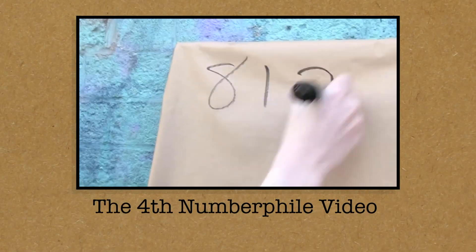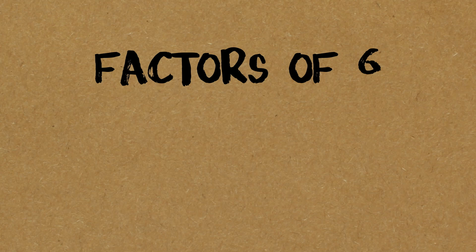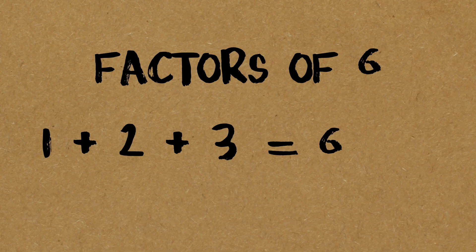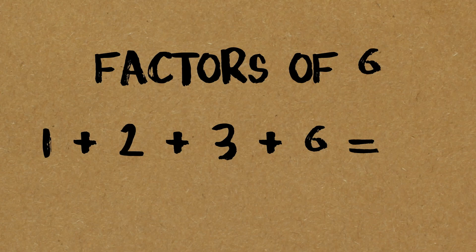We're going to talk about the number 8128. Perfect numbers are the same idea — you take all the factors of the number and add them together. Let's look at six: 1 plus 2 plus 3, and adding 6 itself gives 12. Historically they didn't include the number itself, but including it we get a number that is twice the original. That's what a perfect number is — it has an index of 2.